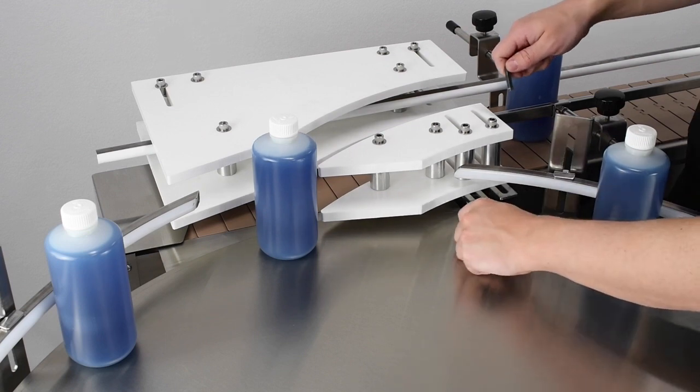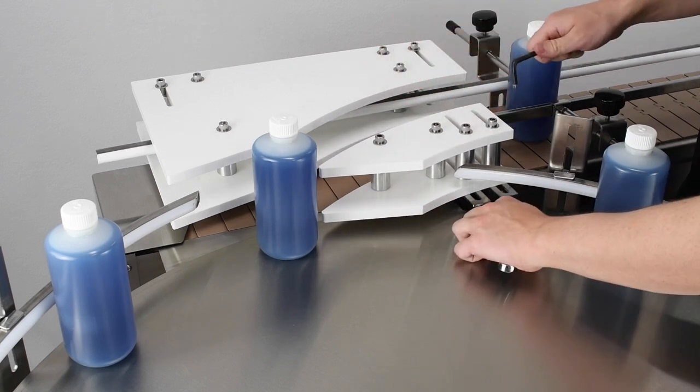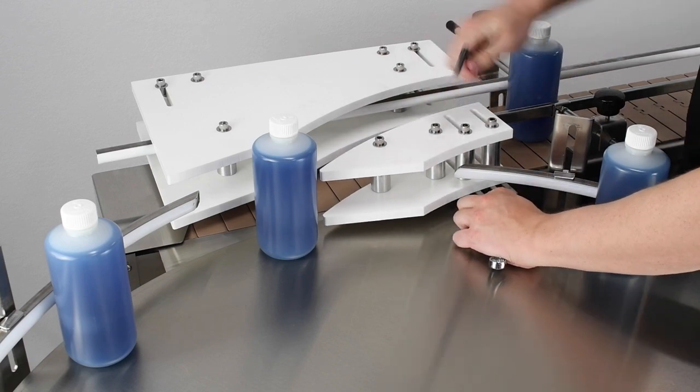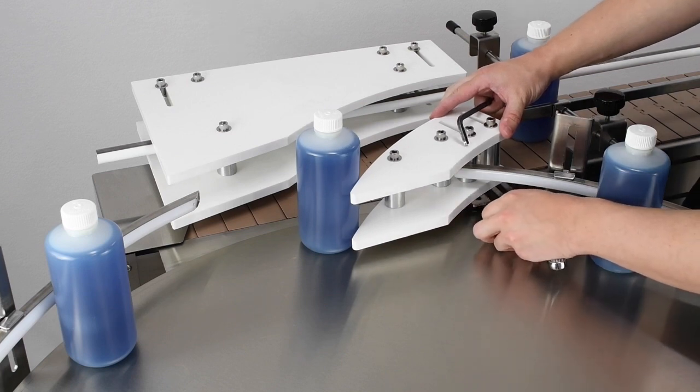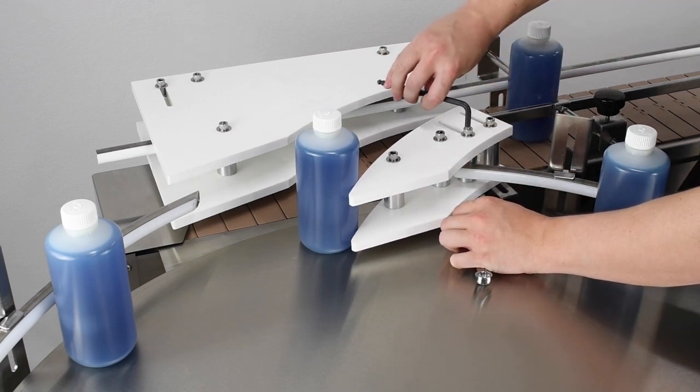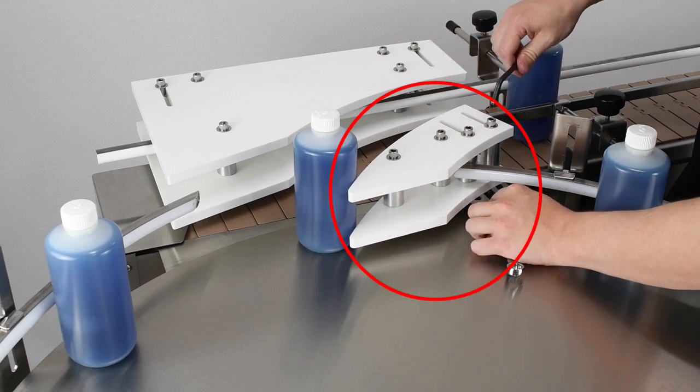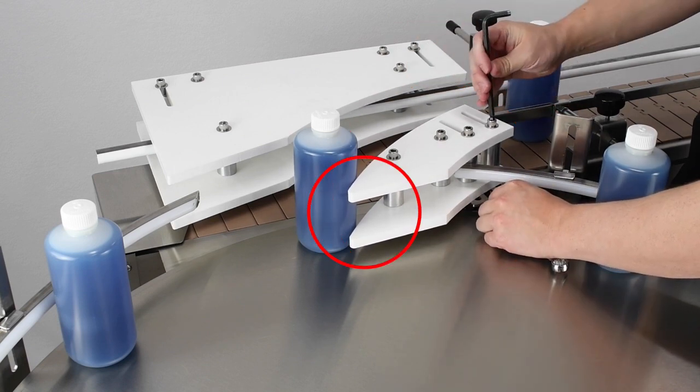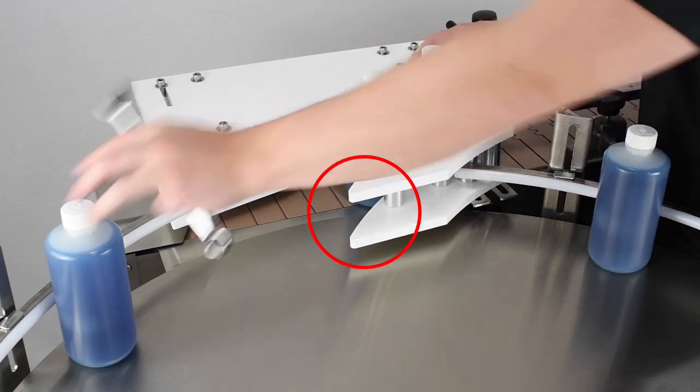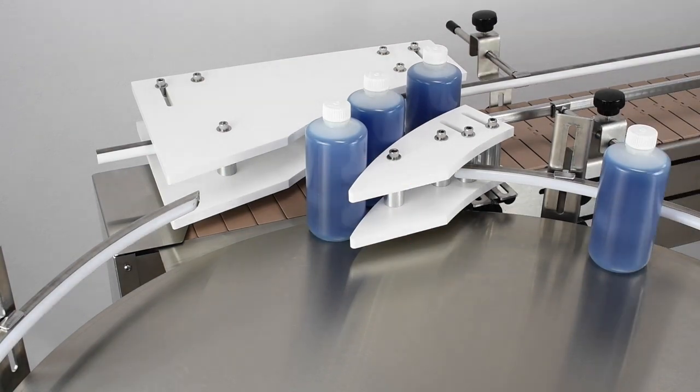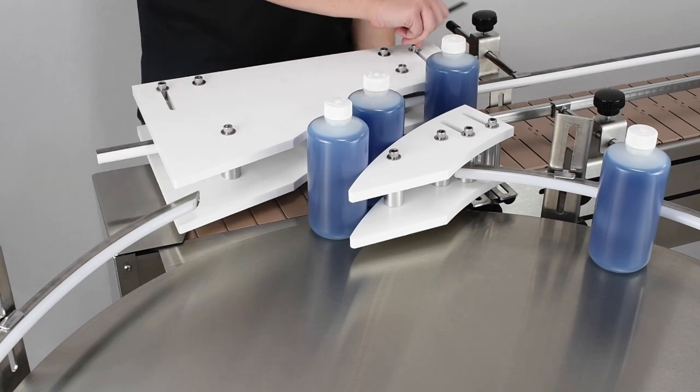To adjust the gates, loosen but do not remove the mounting screws using a half-inch wrench and a quarter-inch hex key. This will allow the plastic gates to move back and forth through the slots in the brackets. Position the gates so that they neatly guide the bottles off of the accumulation table and onto the conveyor. The smaller half of the adjustable gate should protrude about a bottle's width into the table, enough so that it just catches one bottle at a time on the edge of the rotating disc. Retighten the mounting screws once you have adjusted your gates.